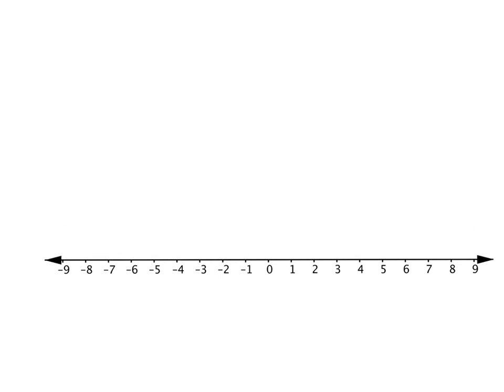For example, if we compare negative 7 with negative 2, let's have a look at where they are. Negative 2 is there, negative 7 is there. Which one of them is smaller? The one that's further to the left is the smaller number. So we can say negative 7 is smaller than negative 2.